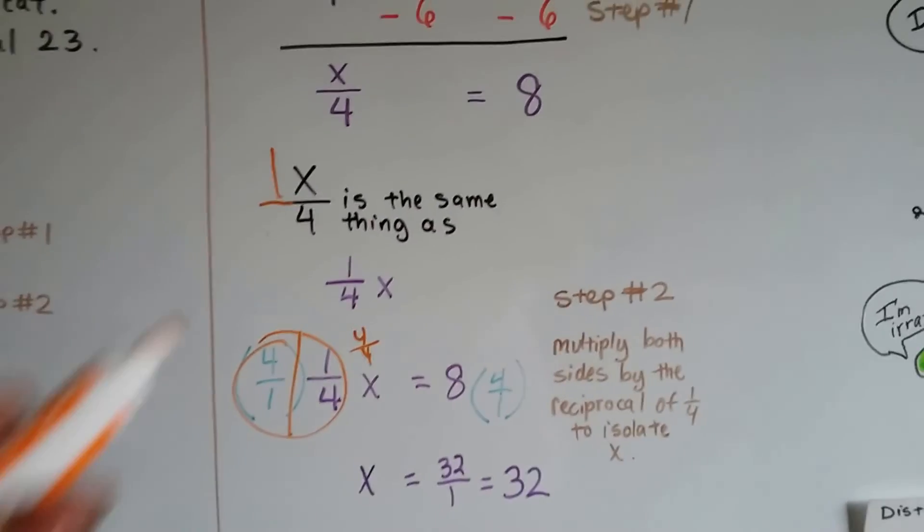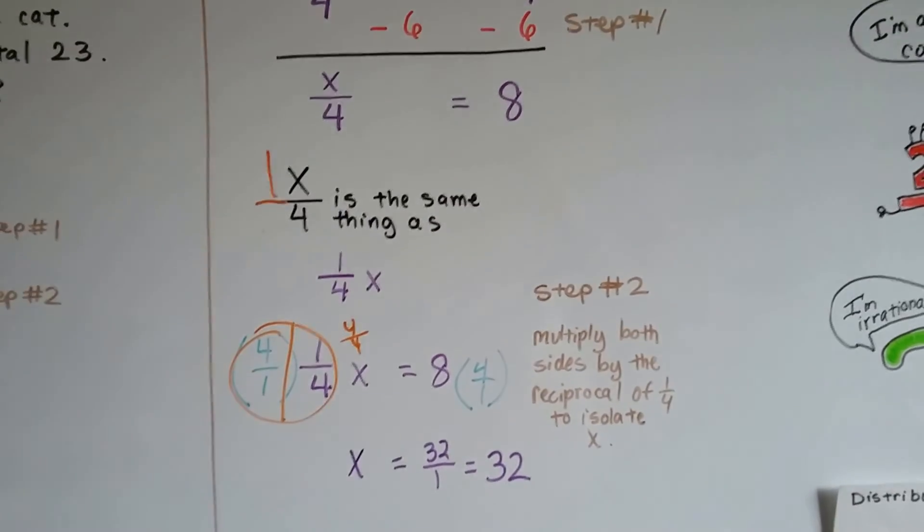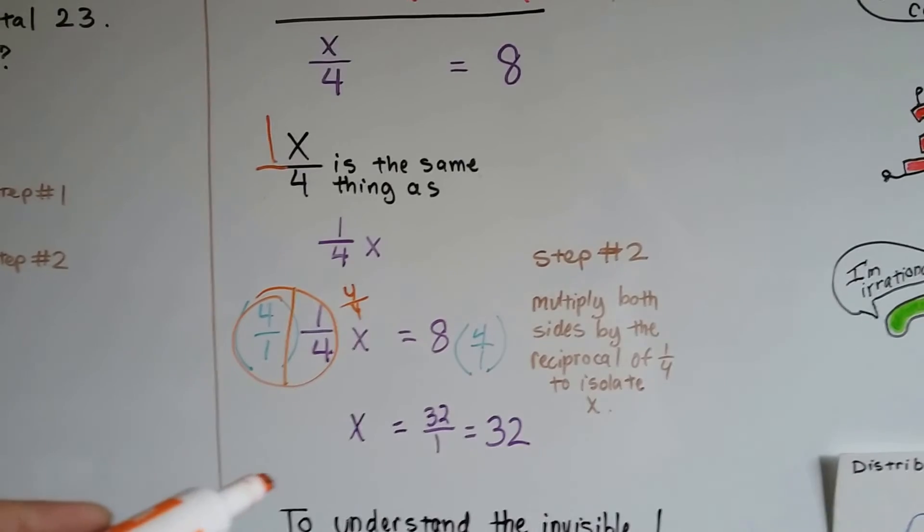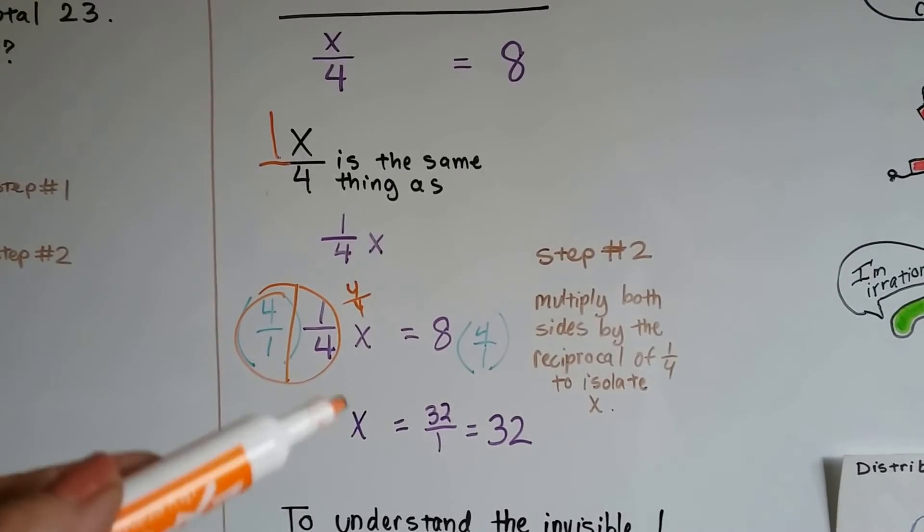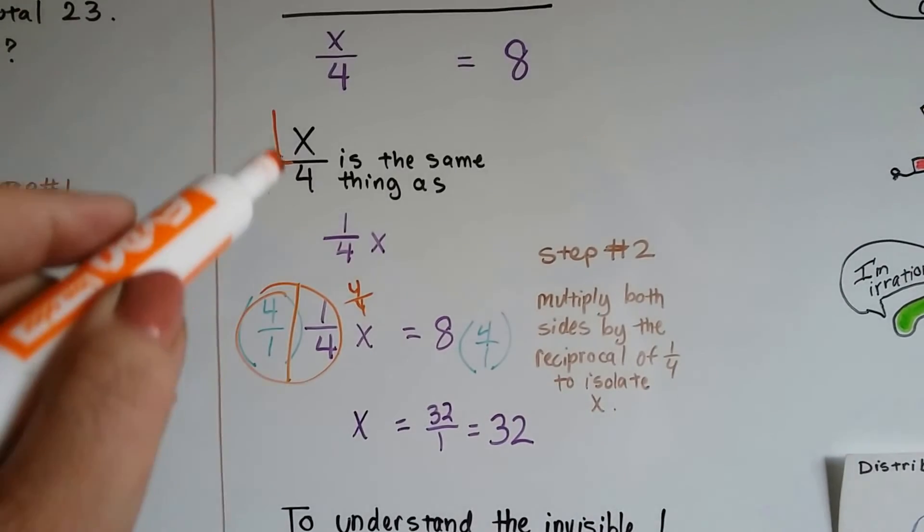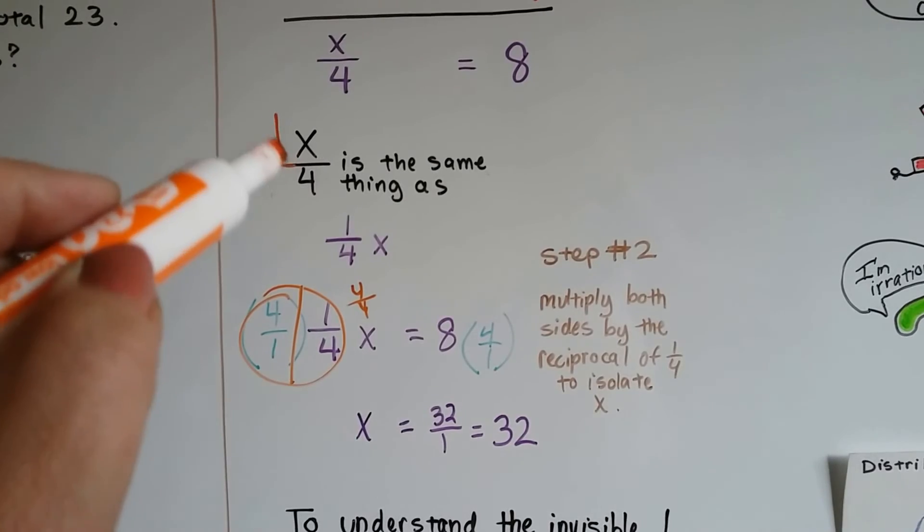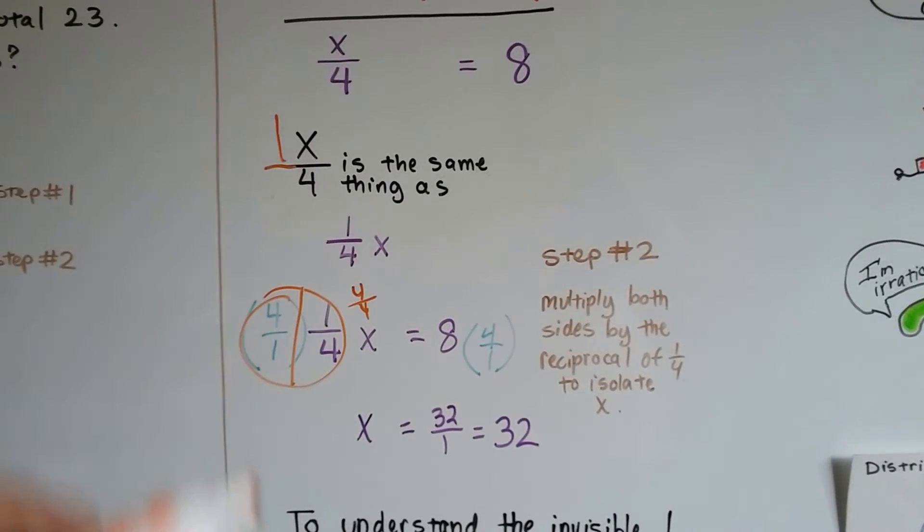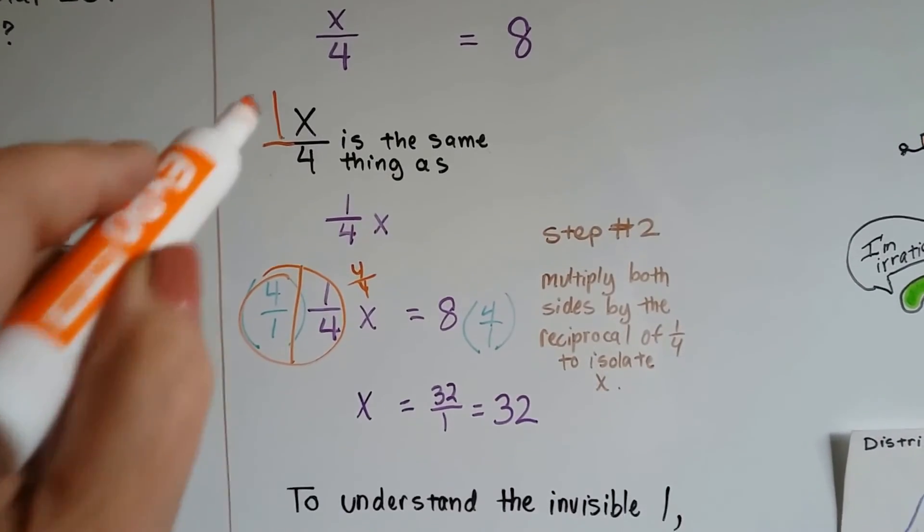Yes, I know, we could have just multiplied these and gotten the 32. But in algebra, we need to go a little step further to prove and show our work. So we rewrote this as 1 fourth x.